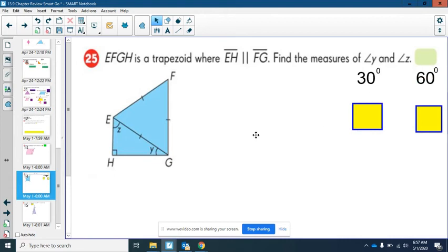Angle Y is 30 degrees. And angle Z is 60. Next question.